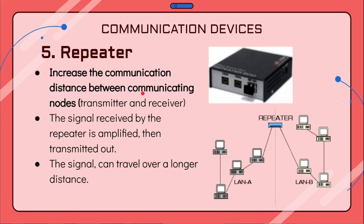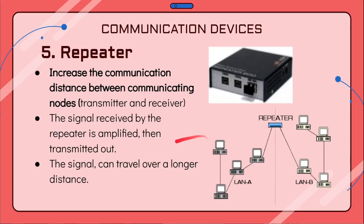Then we have a repeater. A repeater is a communication device that helps to increase the communication distance between communicating nodes — simply the transmitter and receiver. For example, a computer in local area network A wants to send a signal to a computer in local area network B. It sends the signal to the repeater, which takes that signal, amplifies it, and then transmits it to the particular computer in local area network B, so the signal can travel over a longer distance.